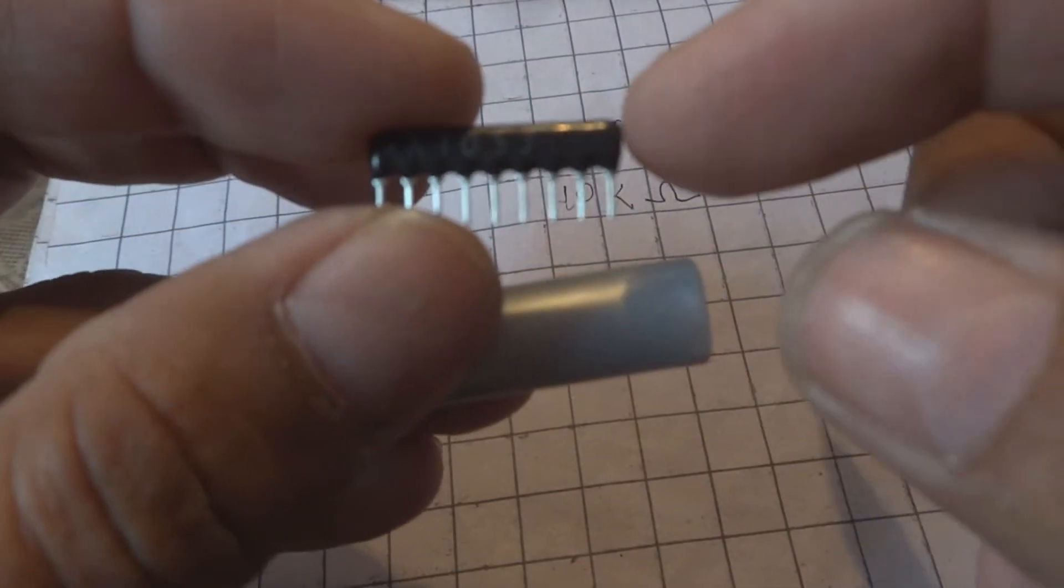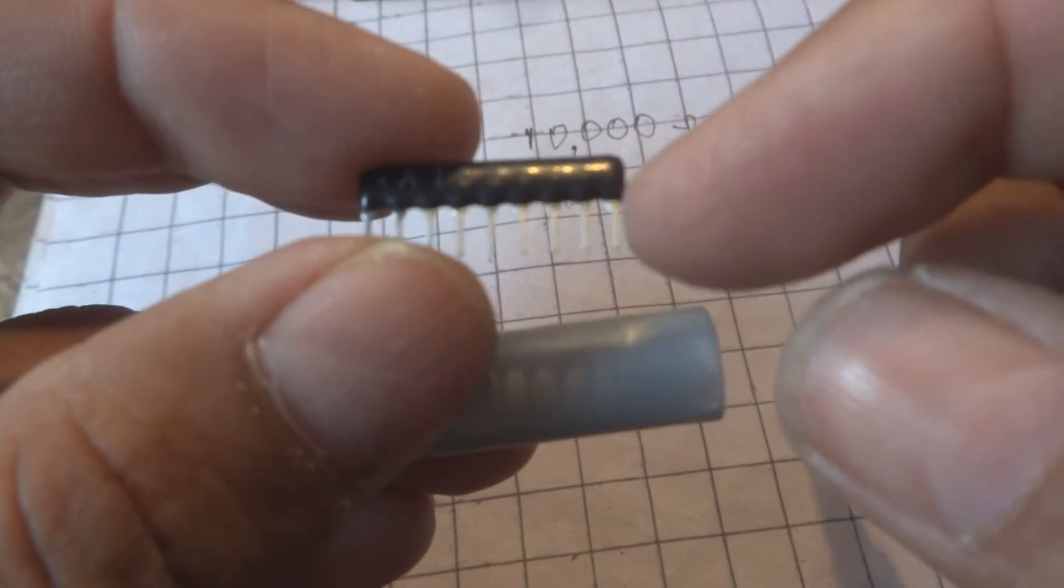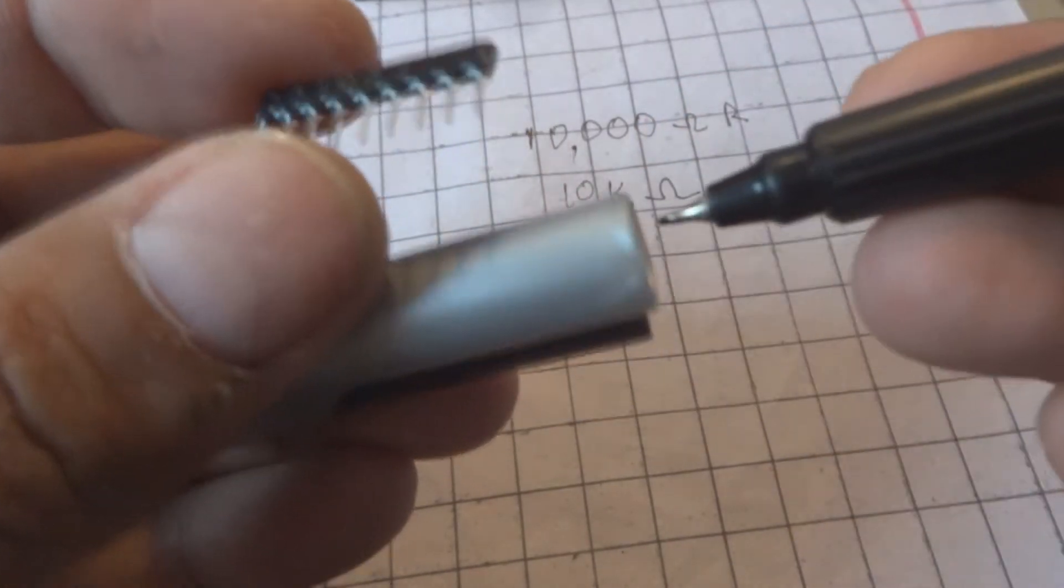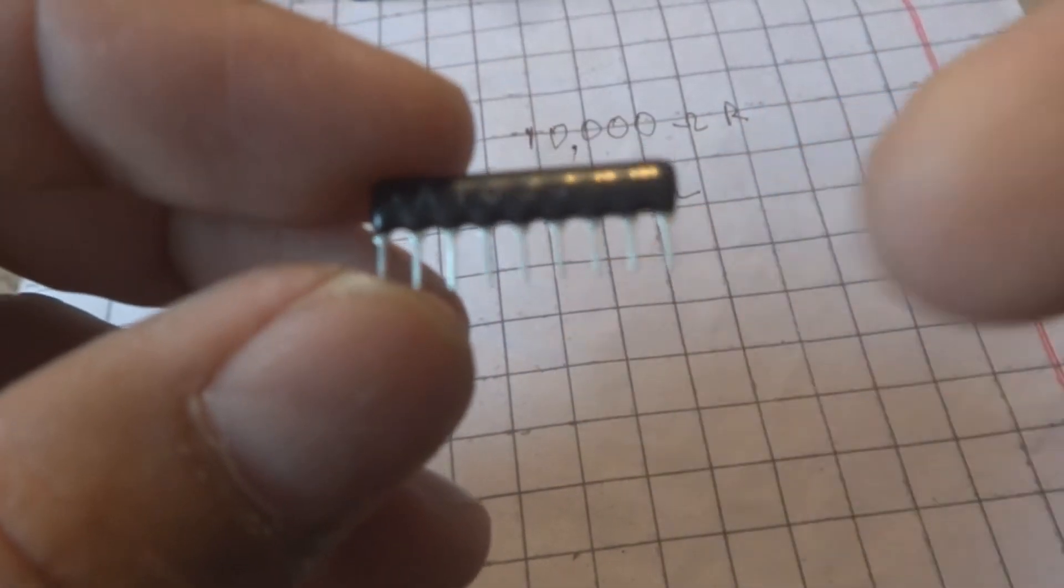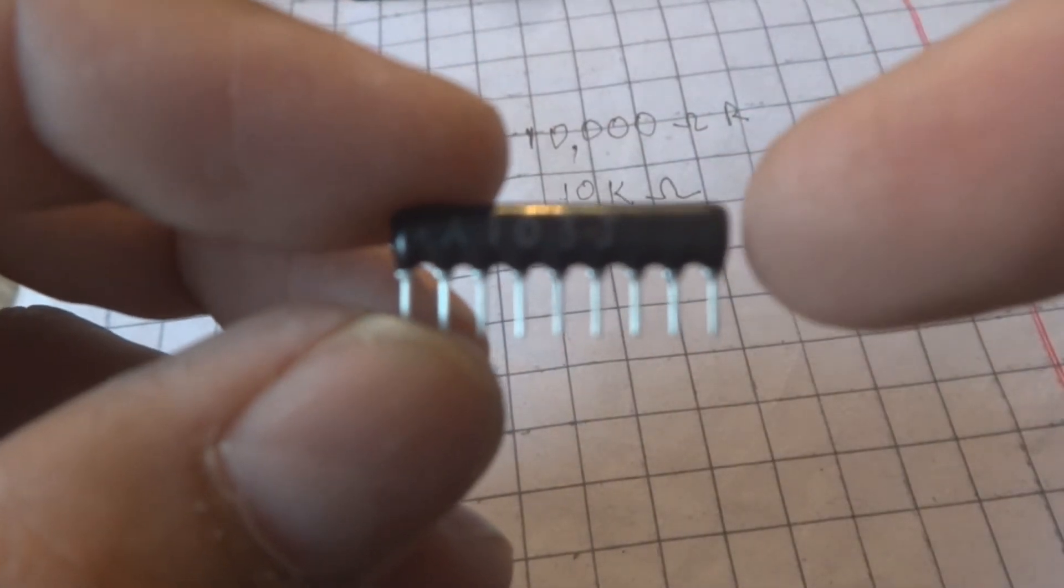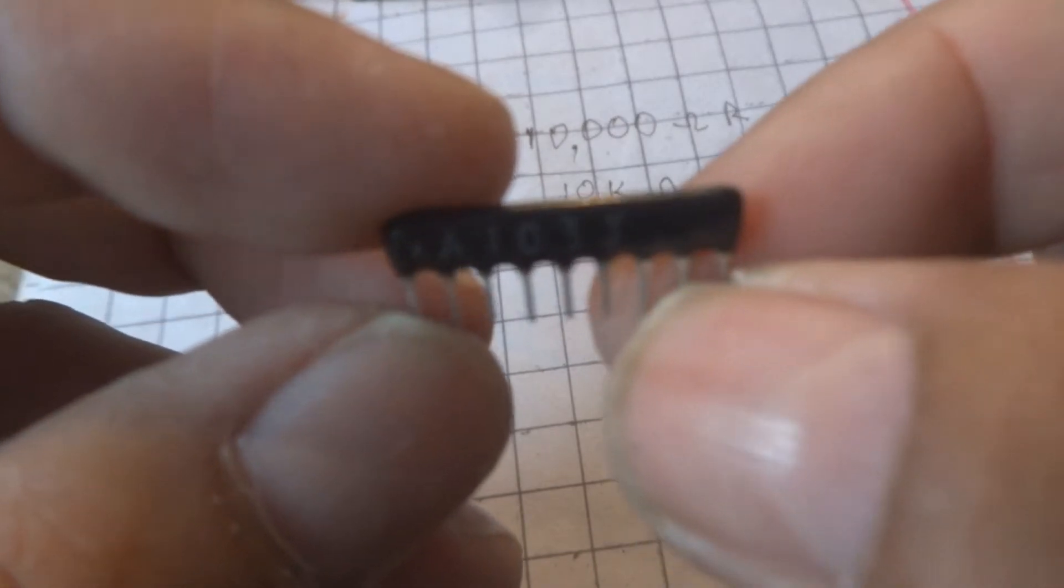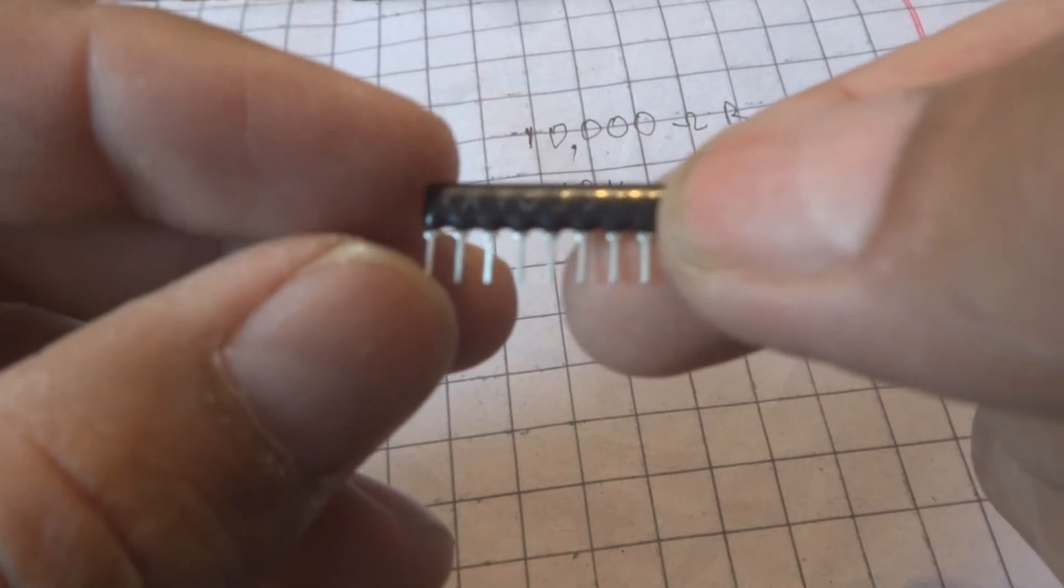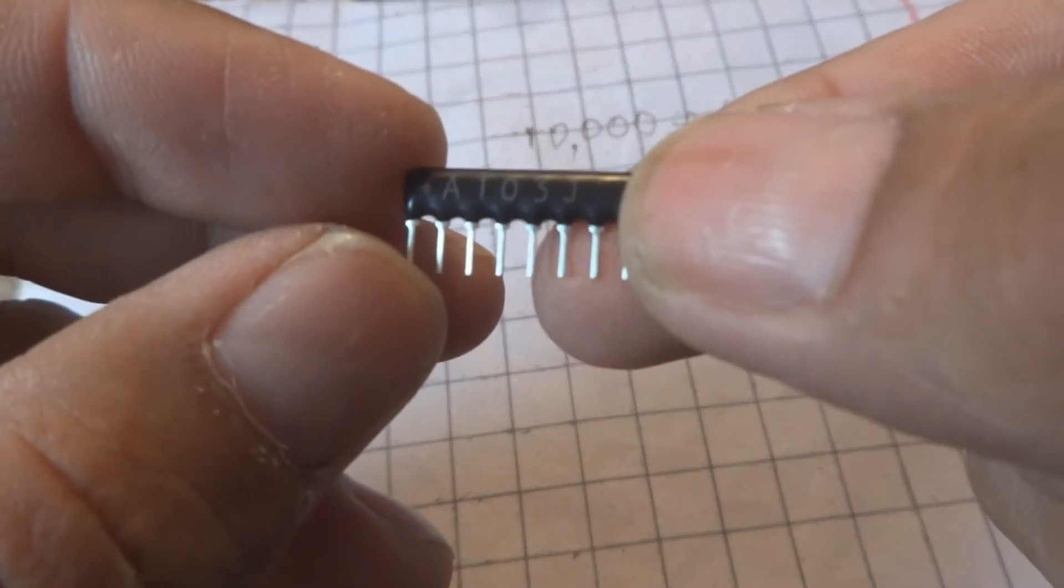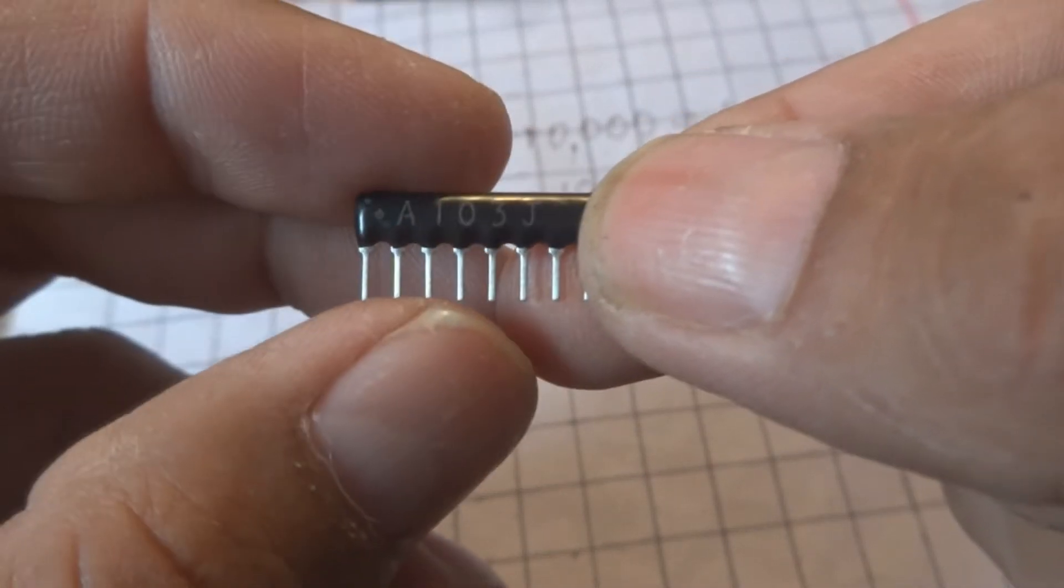So this resistor array is 10 kilo ohm and there are 8 resistances included. Normally we have 8 buses, 8 lines of bus used somewhere in digital circuits. These resistors are tiny, very compact and an easy solution to install. They are used for pull up resistors or pull down resistors normally.